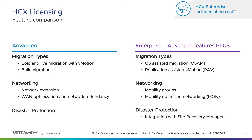HCX Enterprise brings all the same features of the Advanced License, plus additional capabilities. There are two additional migration types: OS-assisted migration provides bulk migration of non-vSphere virtual machines such as KVM and Hyper-V, and replication-assisted vMotion combines bulk migration with vMotion, providing parallel operations, resiliency, scheduling, and zero downtime. Mobility groups allow you to logically group VMs together for migration, while mobility-optimized networking provides intelligent, optimized routing for extended networks from on-premises to the cloud, ensuring traffic is not routed back on-premises once workloads are migrated, which can cause inefficiencies and latency issues. The Enterprise License also brings optimized DR protection through HCX integration with VMware Site Recovery Manager.